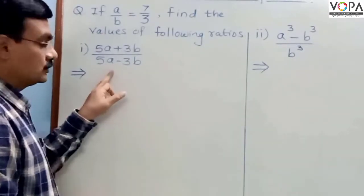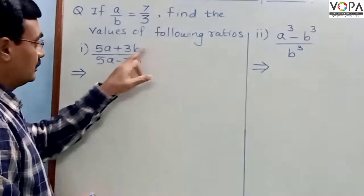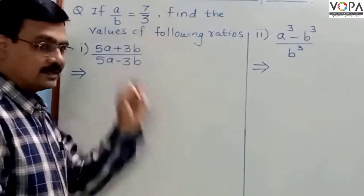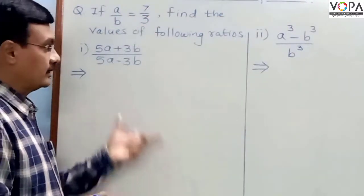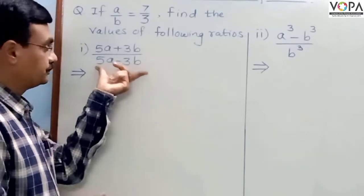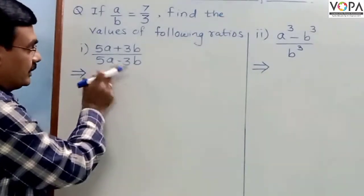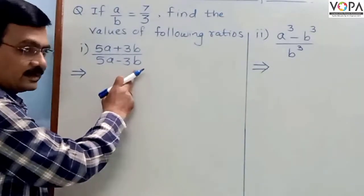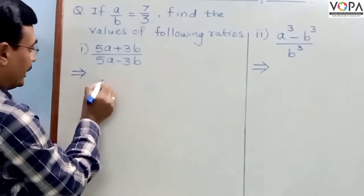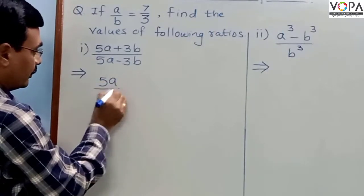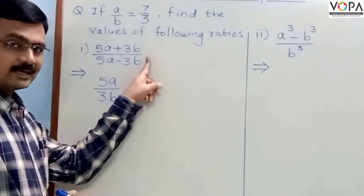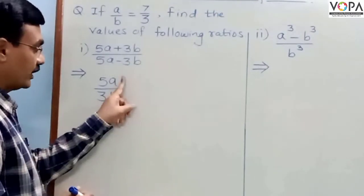The first ratio which is to be calculated is 5A plus 3B upon 5A minus 3B. To find the value of this ratio, you must first find the value of 5A upon 3B.